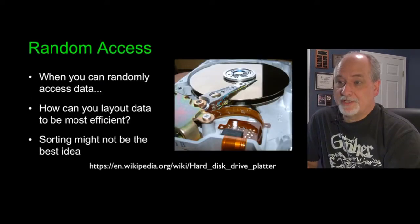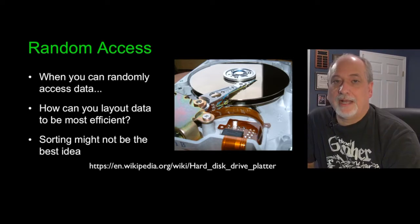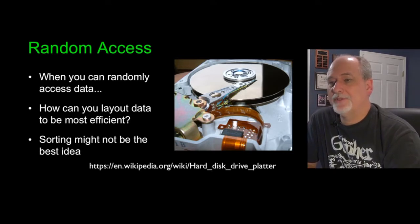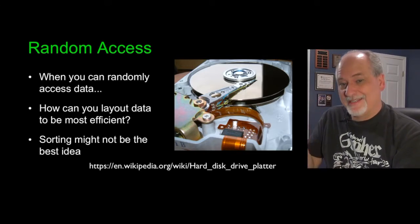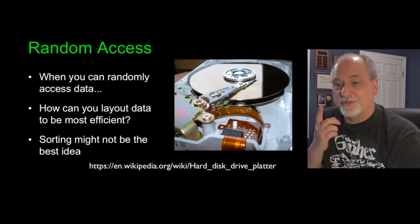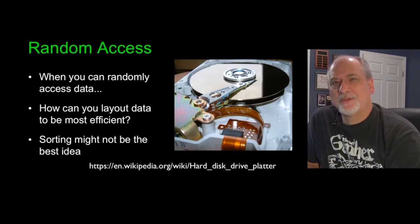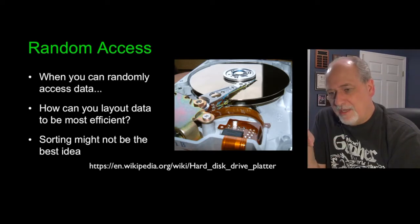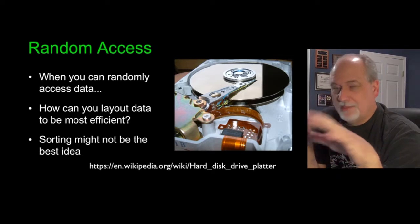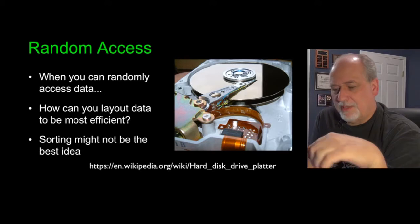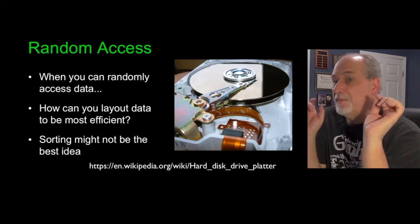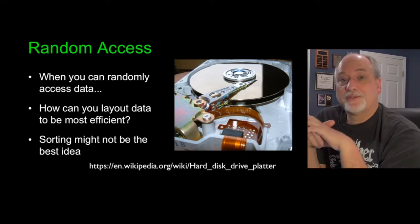It didn't take long until disk drives got better and better, and you could store all accounts and their current balances on computers. The problem then became: what happens if in the middle of the afternoon you want to update a balance? If you have to read all your data and write a brand new file, and that takes 10 minutes, only one person can be updating their bank balance at a time. Because we could randomly access this data — we didn't have to read it all sequentially — the trick was how do you spread the data out and make it so you can change one balance without affecting another?